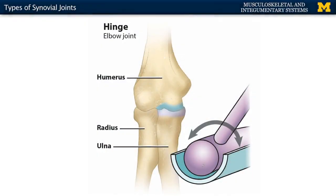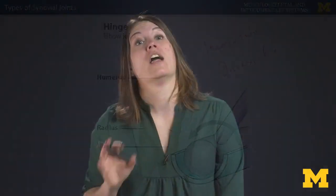Hinge joints are another type we think about quite a bit — some of your larger joints are hinge joints. We're looking here at your true elbow joint, or your humero-ulnar joint. That's going to allow you to flex and extend only in one axis, so these are uniaxial joints. Another main hinge joint is your knee joint, which is actually your most complex joint in the body.